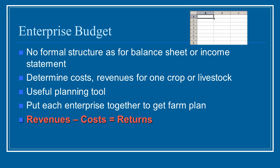If you have an enterprise budget for each different thing that's going on in your farm, you put them together and this helps you create one farm plan for your entire enterprise. So maybe you're doing 100% grass-fed lamb, but you also decided to make some extra income doing pasture and poultry. You do an enterprise budget for each of those separately, then put them together, and it gives you some idea of whether the pasture and poultry is a great idea. It is just for planning purposes, but it can be very, very helpful.